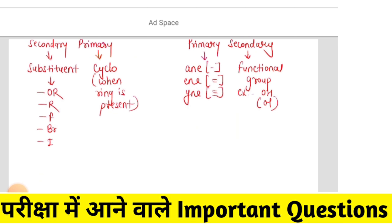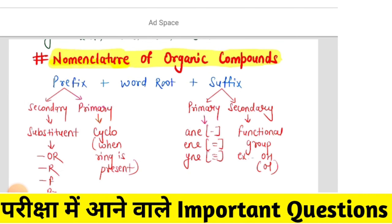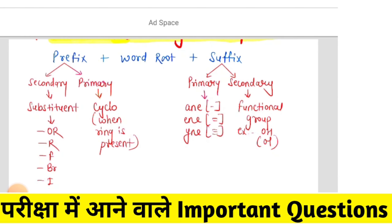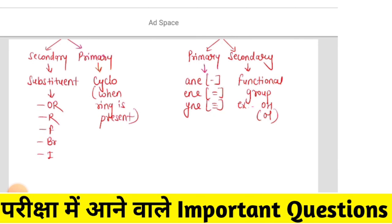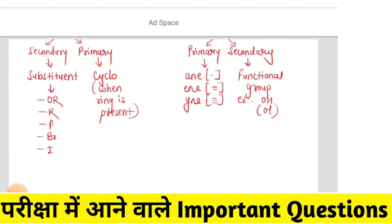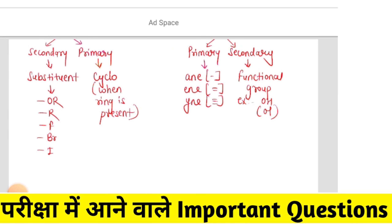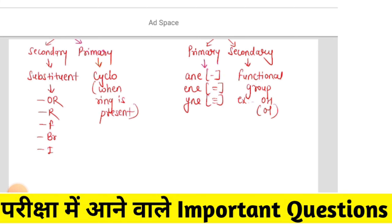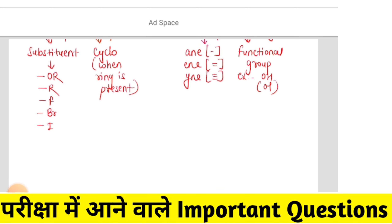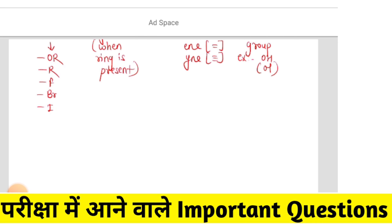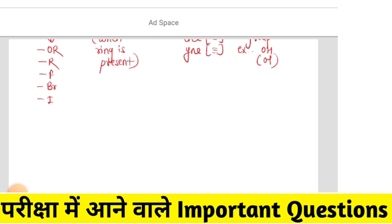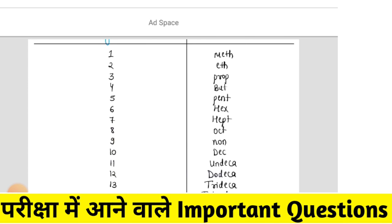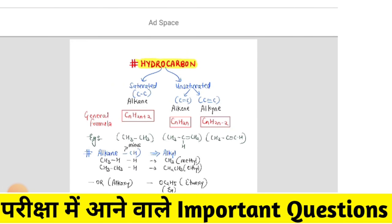In suffix: A-N-E for single bond (alkane), E-N-E for double bond (alkene), Y-N-E for triple bond (alkyne). Single bond is alkane, double bond is alkene, triple bond is alkyne. The secondary suffix includes functional groups — for example, OH means alcohol. This is the word root. Hydrocarbons are of two types: saturated and unsaturated. Saturated hydrocarbons are alkanes. Unsaturated hydrocarbons include alkenes (double bond) and alkynes (triple bond). You must remember the general formulas for alkane, alkene, and alkyne.